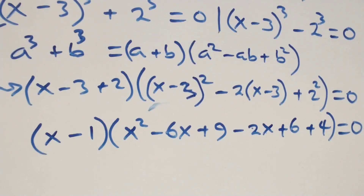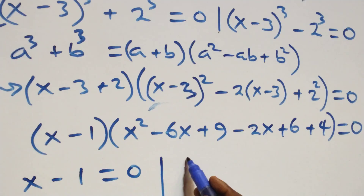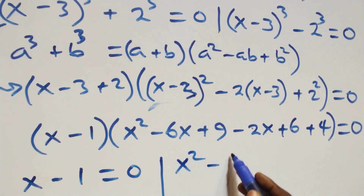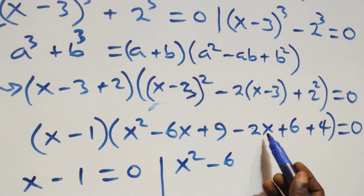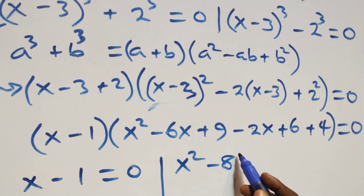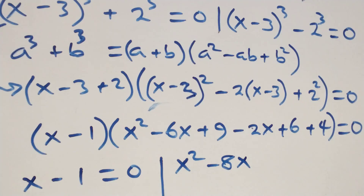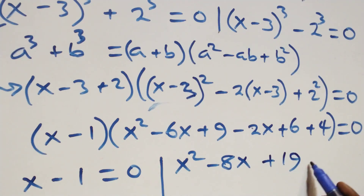Then here we have 2 possible cases. The first one: x minus 1, equals to 0. Or we have x square, minus 6x, minus 2x, that becomes minus 8x. Then we bring this together: 6 plus 4, that's 10; 10 plus 9, here we have plus 19. Close bracket, equals to 0 here.